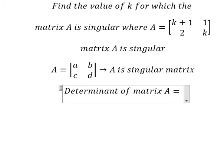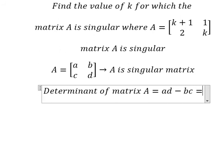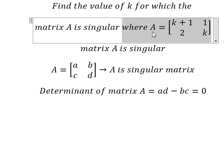should be AD - BC = 0. So that means we have this matrix A in here.